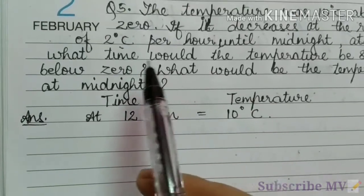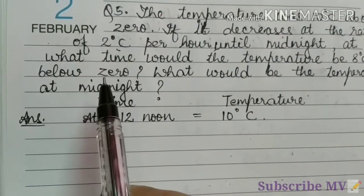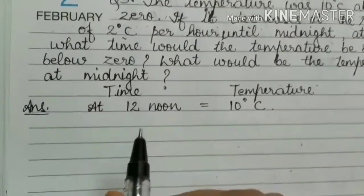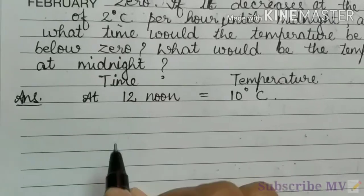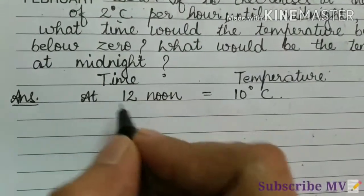Every hour it decreases by 2 degree. So what time would be the temperature be 8 degree Celsius below 0? That is minus 8 degree Celsius. So we have to find the time.